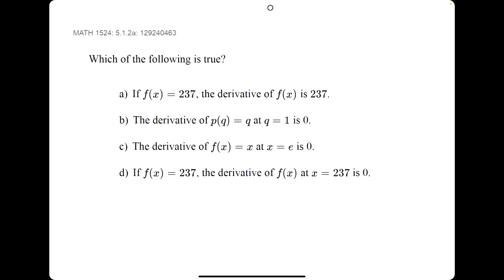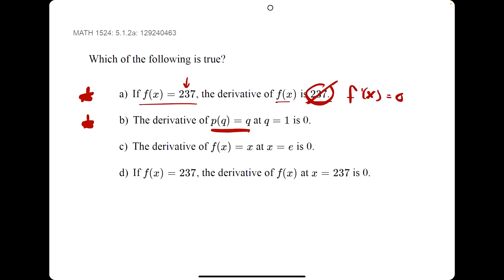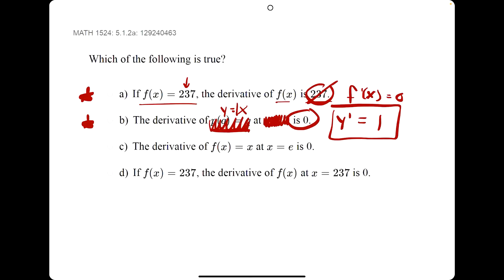In this problem, they give us four statements and ask which is true. Starting with A: if f of x equals 237, the derivative of f of x is 237. We know the derivative of any constant should be 0, so this should say 0, not 237. Statement B: the derivative of p of q at q equals 1 is 0. Think of this as p equals q, the same as y equals x. The derivative of y equals x is not 0 — y prime would be 1, because the derivative of 1 times x is just that constant, 1. Statement C is the same idea: f of x equals x means y equals x, and the derivative is 1, not 0.